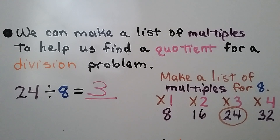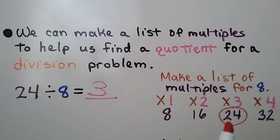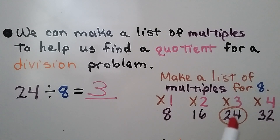We can also estimate using a list of multiples. If that said 25, we would know that the quotient was in between 3 and 4, because 25 is in between 24 and 32.